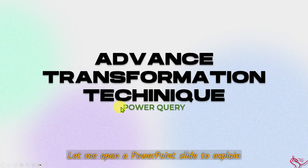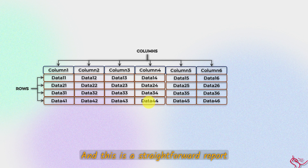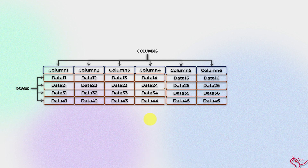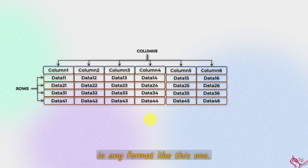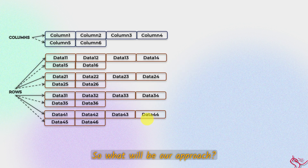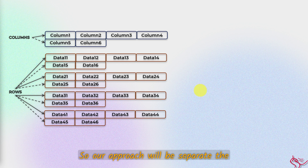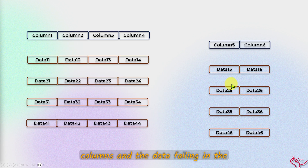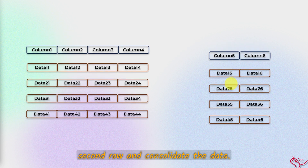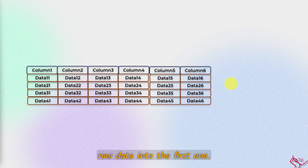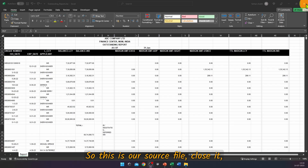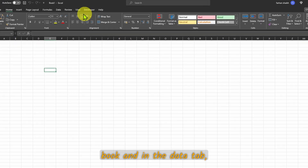Let me open a PowerPoint slide to explain how we will solve this problem. Typically we are used to straightforward reports, but this is not the case in the real world — data can come in any format. Our approach will be to separate the columns and the data falling in the second row, consolidate the data, and then merge the second row data into the first one.